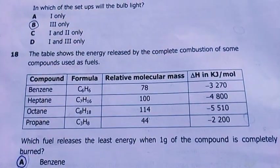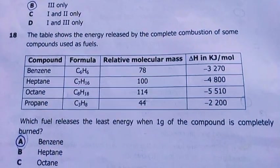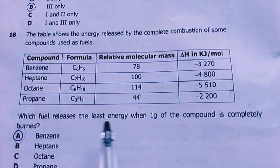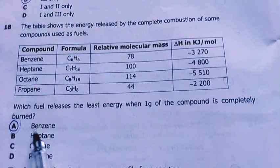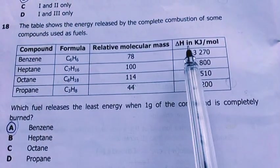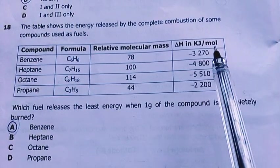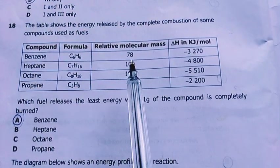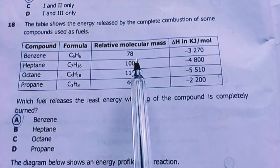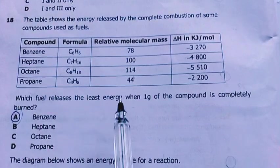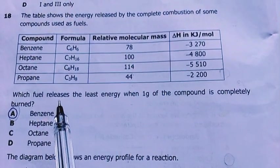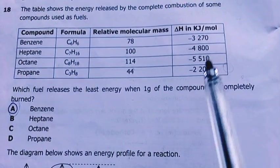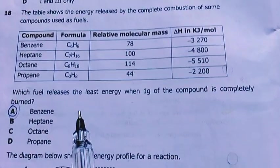Number 18. The table below shows the energy released by complete combustion of some compounds used as fuels. Which fuel releases the least energy when one gram of the compound is completely burned? Look at benzene, heptane, octane, propane. My answer was benzene. Relative molecular mass, enthalpy change or amount of heat in kilojoules per mole. In kilojoules per mole, so when you go to one gram, when you consider mass, benzene will be your answer.